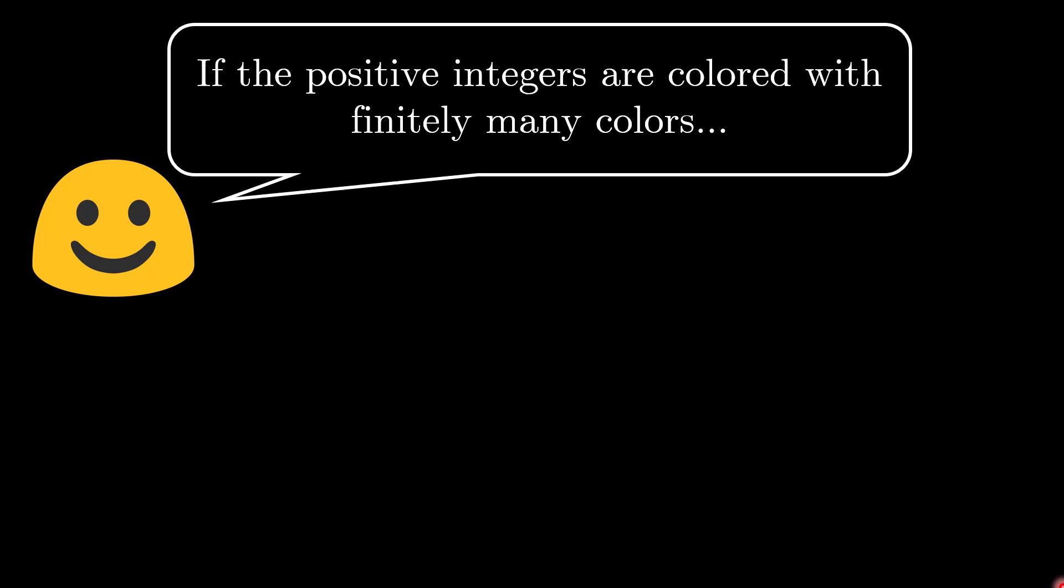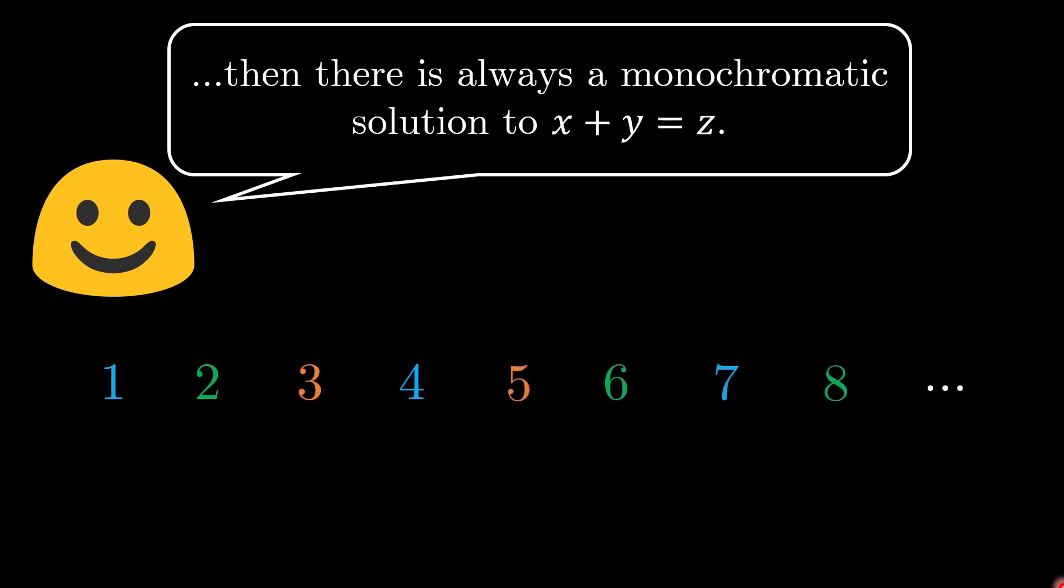Suppose that the positive integers are colored with finitely many colors. So over here I have an example where I use three colors. The claim is that there is always a monochromatic solution to x plus y equals z.